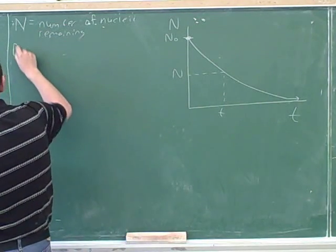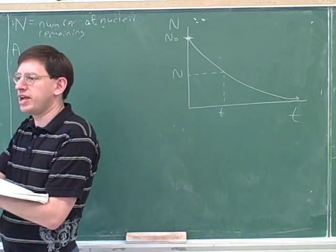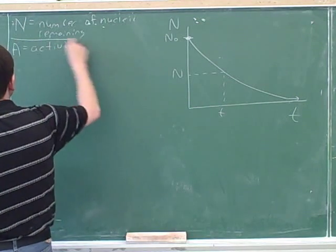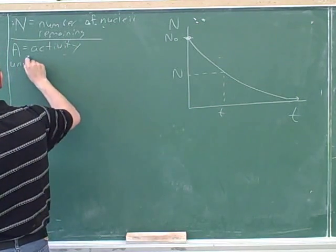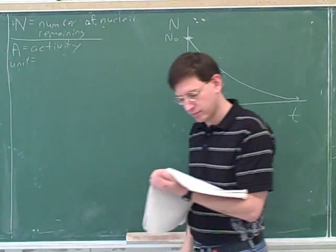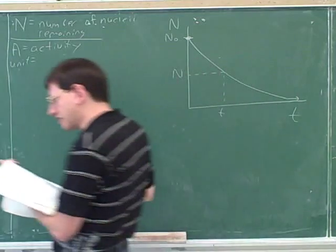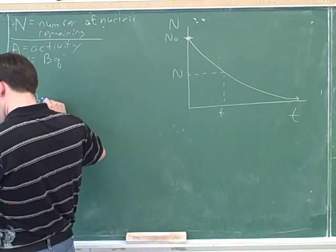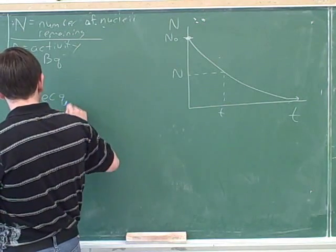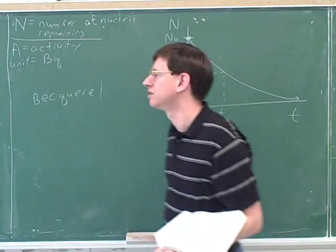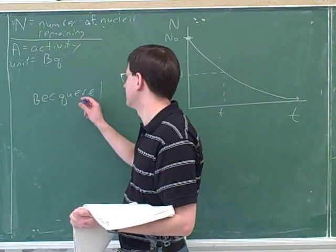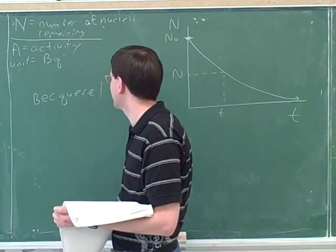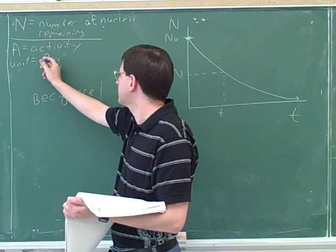Another symbol is capital A for activity, or radioactivity. The SI unit for activity is the Becquerel, if I'm pronouncing that right. Becquerel was the French guy that I think he was the first person to discover radioactivity, so he got the unit for radioactivity named after himself. I think that was 1896 or so. So this is activity.